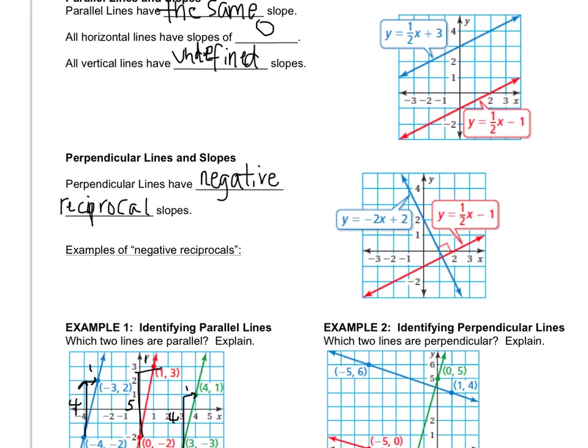And then you say, what the heck is a negative reciprocal slope? And so if you look at the picture, you will see an example of negative reciprocal slopes. Negative two over one is negative reciprocals with one half. So negative doesn't really mean negative. It means change the sign. So negative turns to positive.